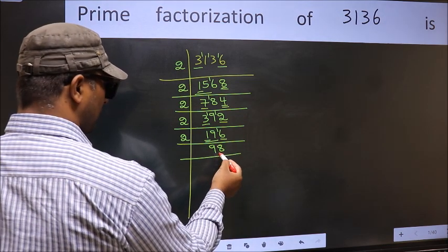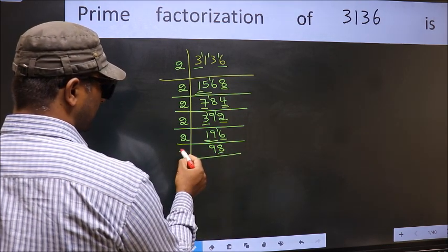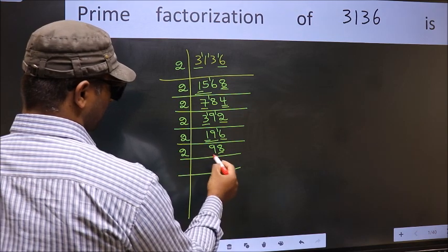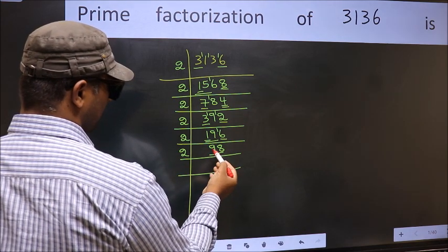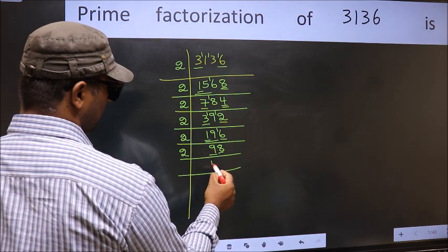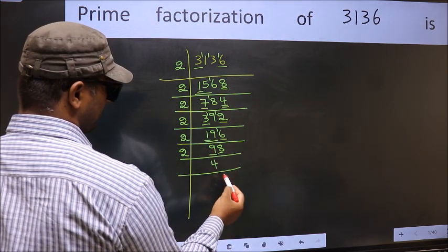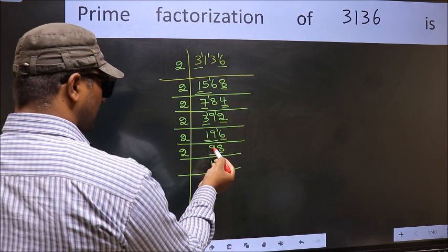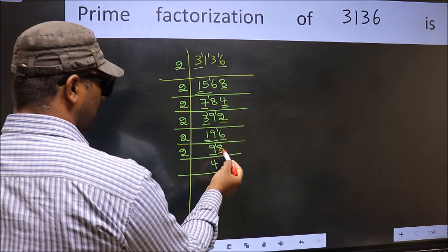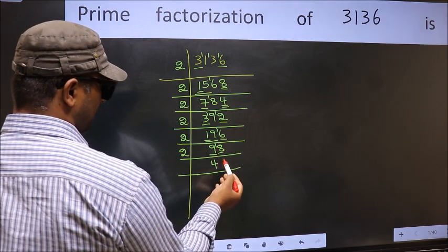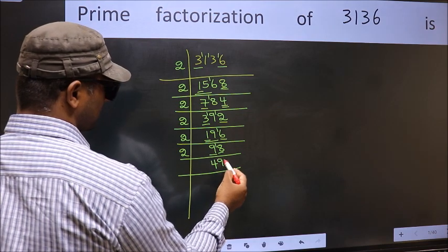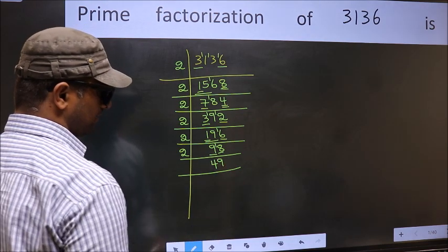Now the last digit is 8, so take 2. First number 9 — a number close to 9 in the 2 table is 2×4=8. 9 minus 8 is 1, carried forward 18. When do we get 18 in the 2 table? 2×9=18.